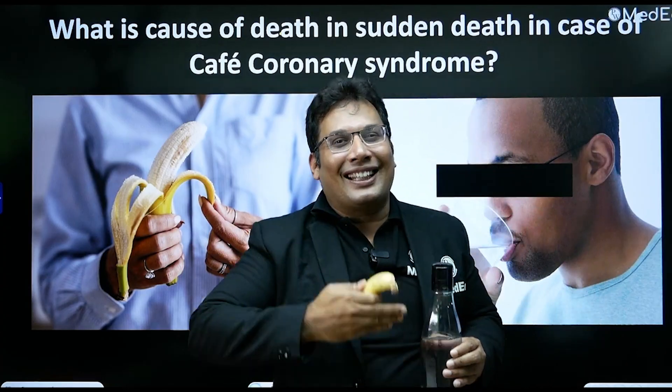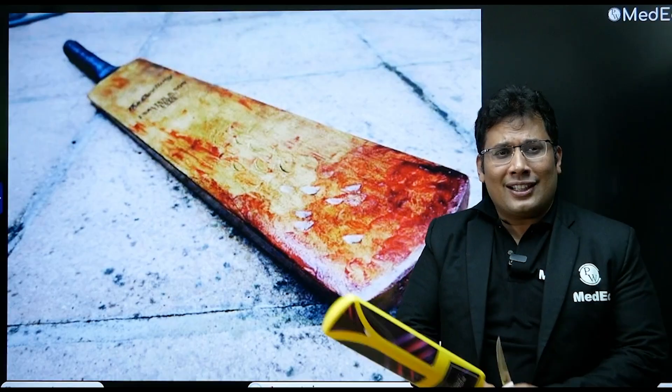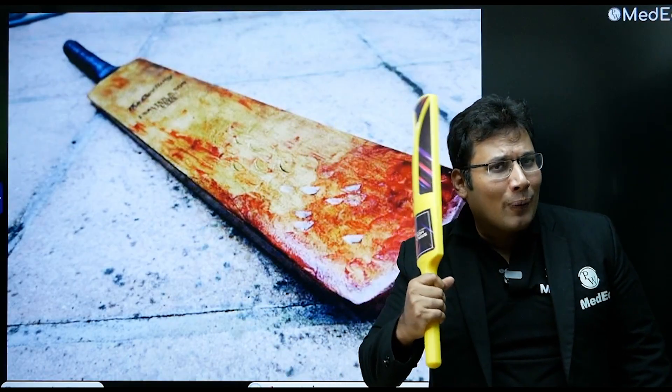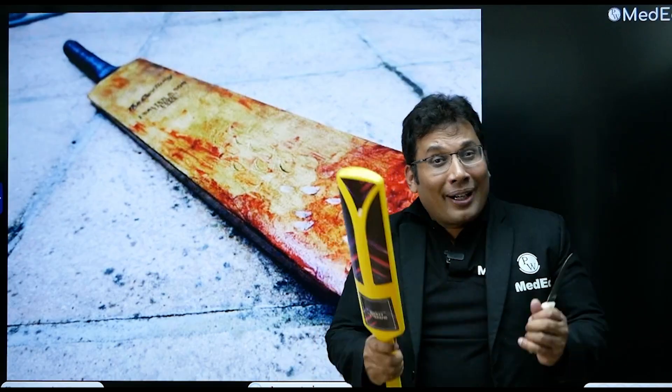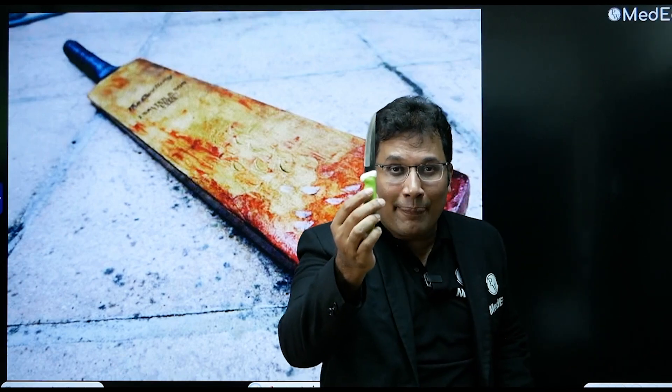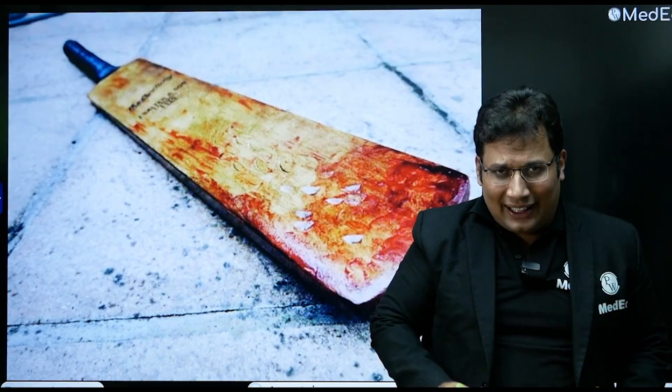One more example: what are the injuries caused by a blunt object? The injuries are abrasion, bruise, and laceration. What are the injuries caused by a sharp weapon like a knife? It can cause a stab wound, or it can lead to an incised wound — these are very commonly asked in university exams as the basics of forensic medicine.